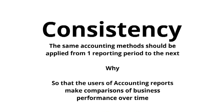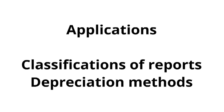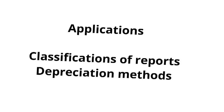Consistency: we must use the same accounting methods from one period to the next so that users of reports can make useful comparisons of business performance over time. If we classify our balance sheet into current and non-current, or our cash flow statement into operating, investing, and financing, we must do so consistently period to period. We're not allowed to simply change depreciation methods — for example, switching from straight-line to reducing balance — in order to increase expenses and reduce tax on profit.